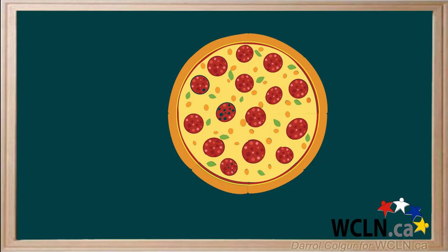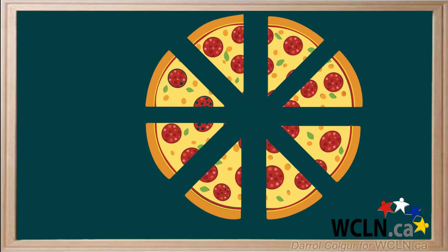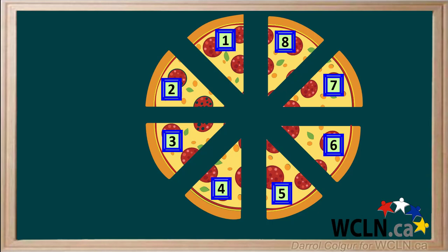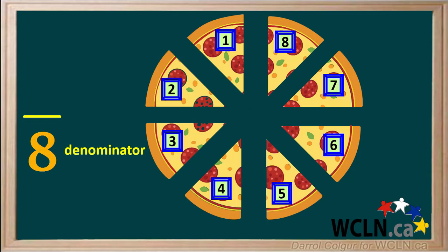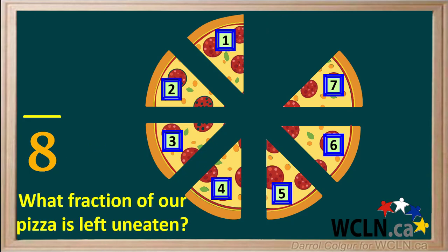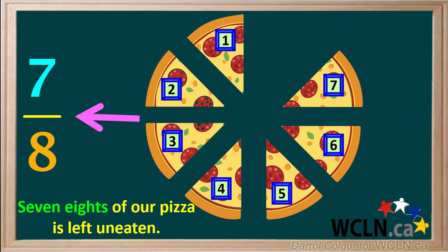Let's start with one full pizza again. This time we'll cut it up into smaller pieces. If we number these pieces, we see we now have eight pieces. The denominator is the number of parts a single thing is divided into, so we can write a fraction in which the denominator is eight. Let's say someone eats one of the pieces. Now we want to know what fraction of our pizza is left uneaten. We're talking about seven pieces, so the numerator is seven, and we can say that seven eighths of our pizza is left uneaten.